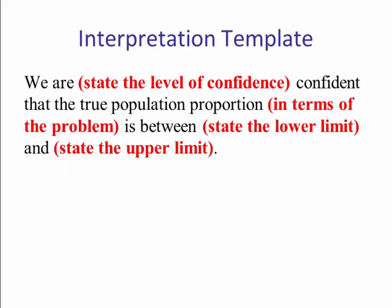This is our interpretation template. What's in red changes. What's in black stays the same for each interpretation for a confidence interval. So we say we are, then we state the level of confidence. It's either going to be 90, 95, or 99%. Then we say confident that the true population proportion—very important that we say population proportion or true population proportion, because we are using p hat to estimate a larger population proportion. We always want it in terms of the problem. We say it is between or is in the interval. We state the lower limit and then the upper limit.